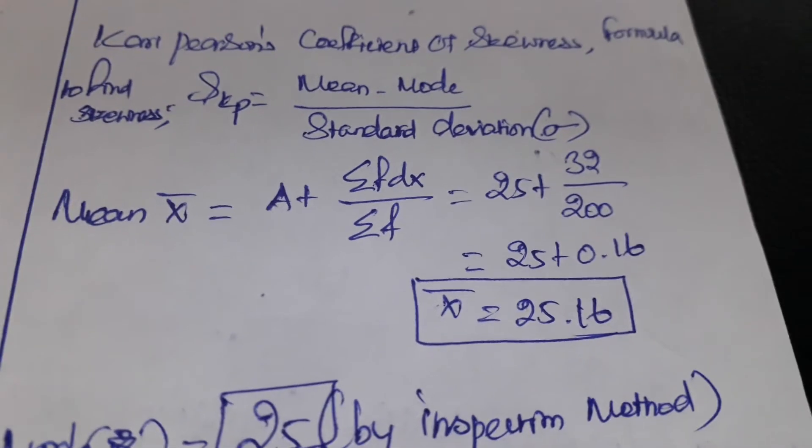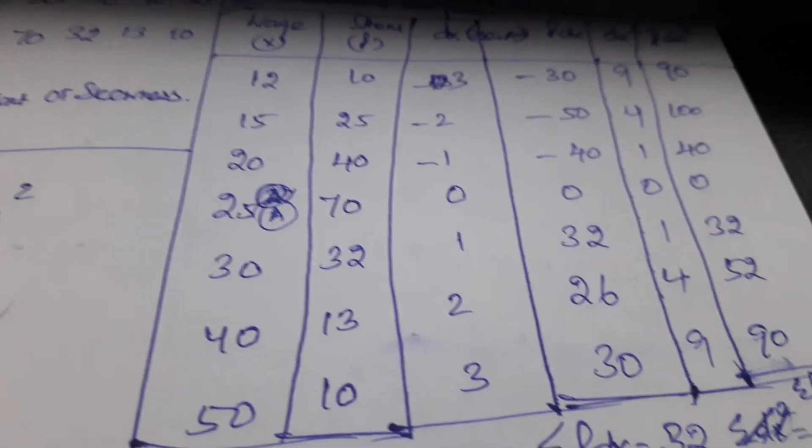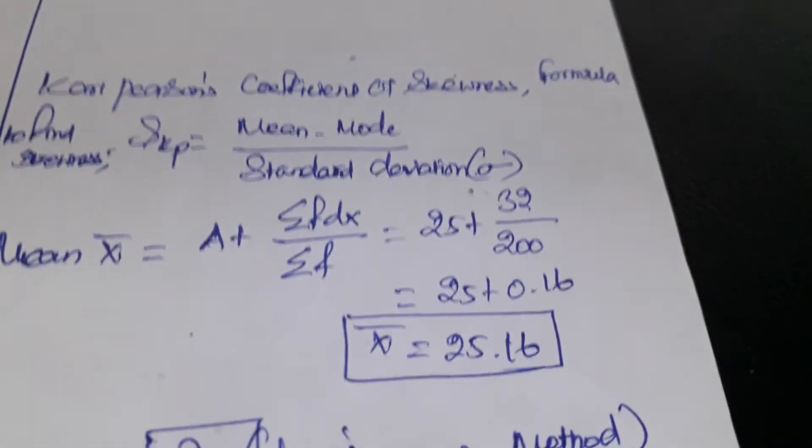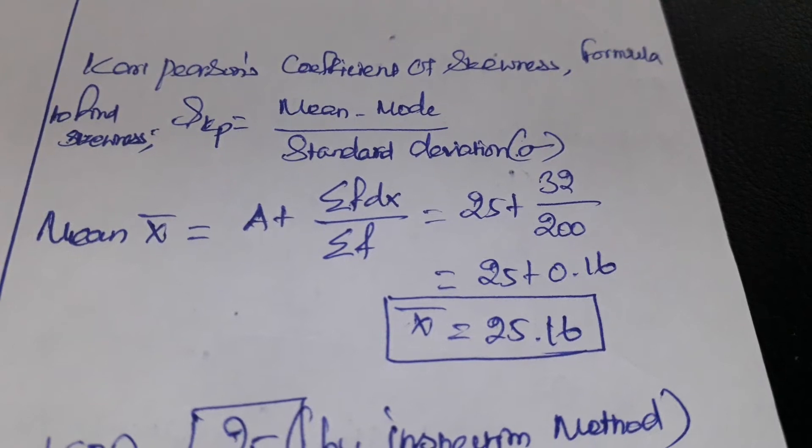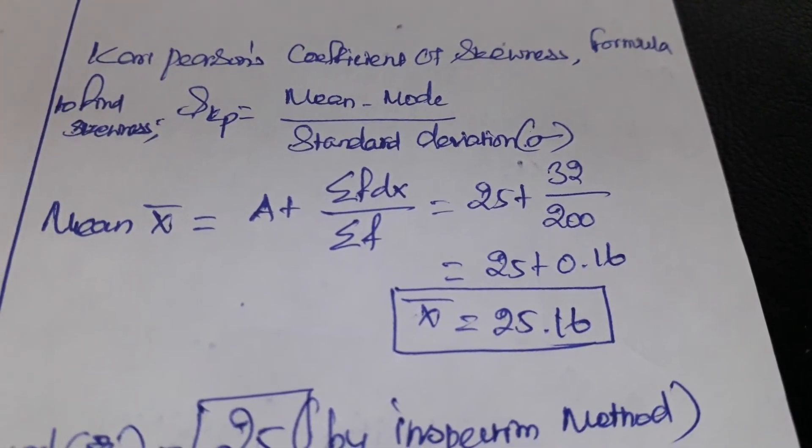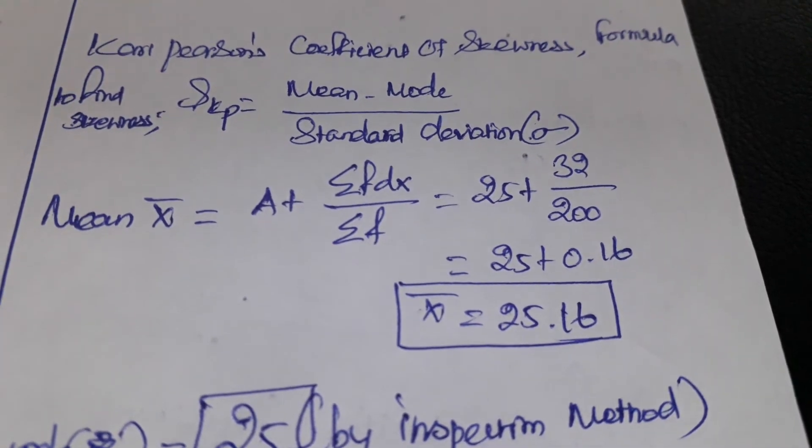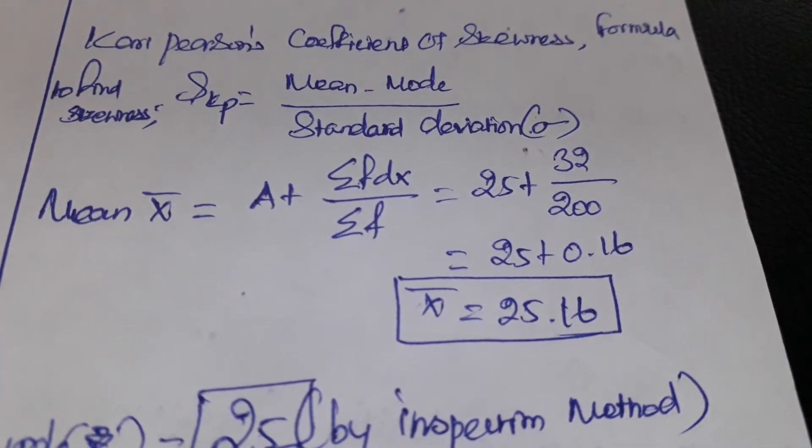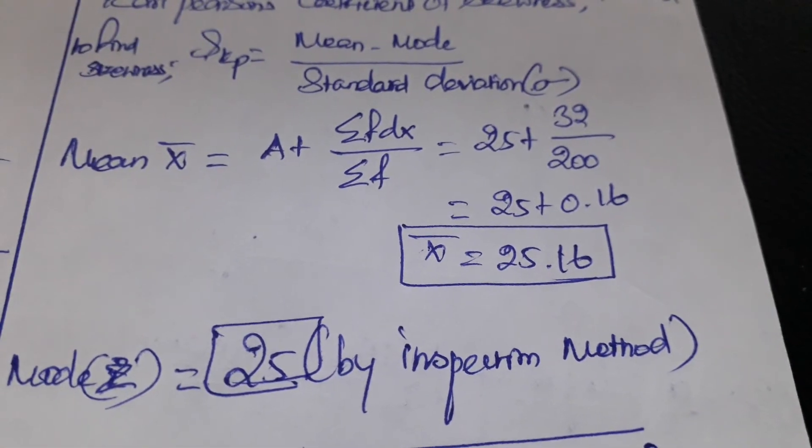That is 25. We have assumed the value 25 as 0. Then sigma f of dx is equal to 32. Summation of frequency is equal to 200. We need to apply the values. We can get the mean as 25.16.